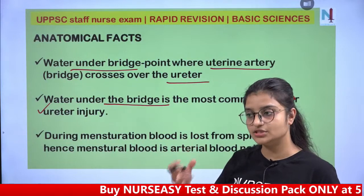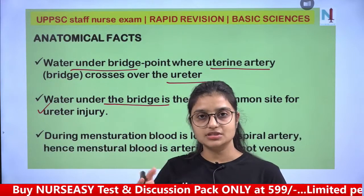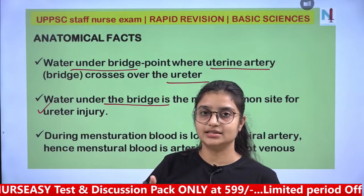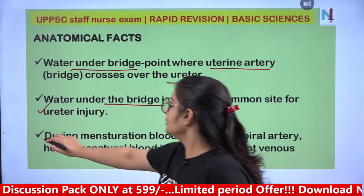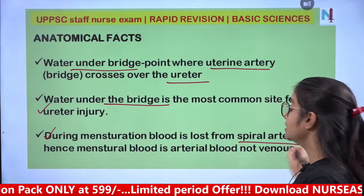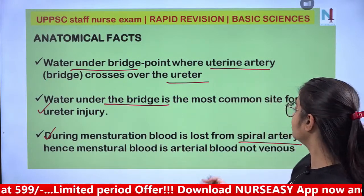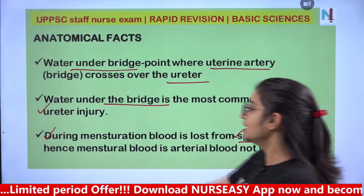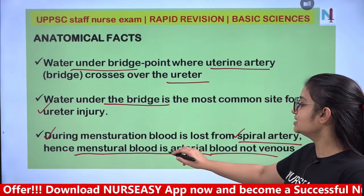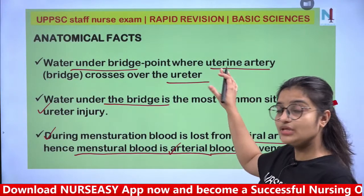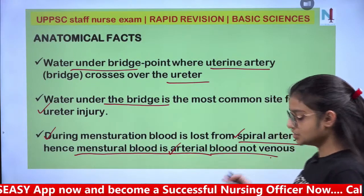The point where the uterine artery and ureter cross is approximately 2 cm above. During menstruation, blood is lost from the spiral artery, which supplies blood to the endometrium. If a question asks whether menstrual blood loss is arterial or venous, the answer is arterial blood, not venous.